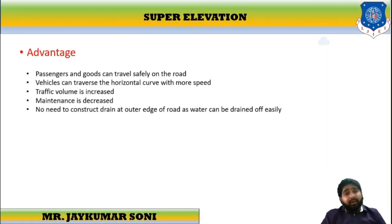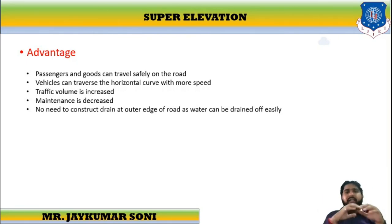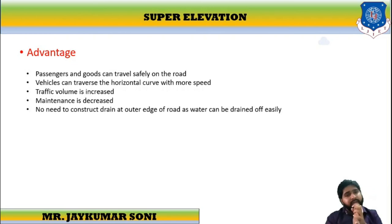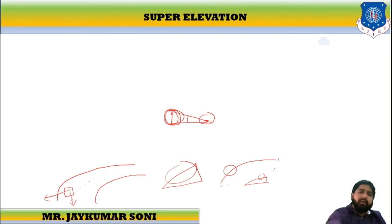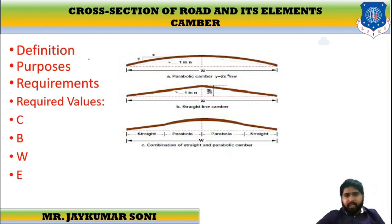The advantages of super elevation: passengers and goods can travel safely, vehicles can travel horizontal curves with more speed, traffic volume can also increase, accident rates are less, maintenance is also decreased, and there is no need to construct any drain on the outer side because the raised outer edge allows water to automatically drain out. There are three types of camber: parabolic, straight, and combination. Usually the combination of straight and parabolic camber is used. I hope you have gone through the concept thoroughly. Thank you so much.